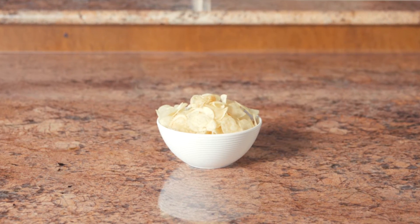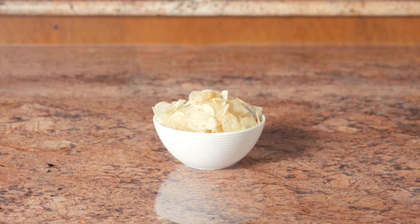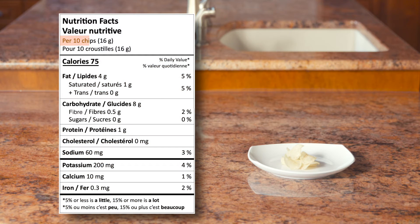Looking at this bag of chips, the nutrition facts table indicates that the serving size is 10 chips. The table also indicates 1 gram of protein. This means that these 10 chips have 1 gram of protein. But what if you finished your 10 chips and decided to eat 10 more? This happens to a lot of us. Then the amount of protein you will get changes.